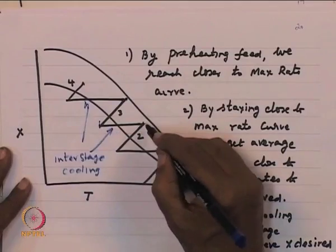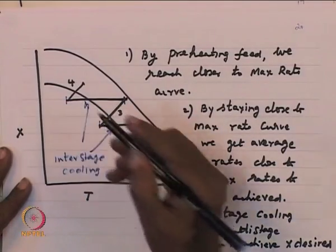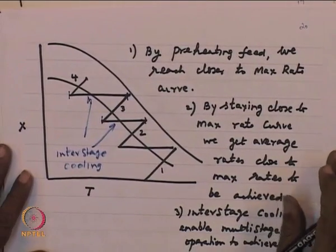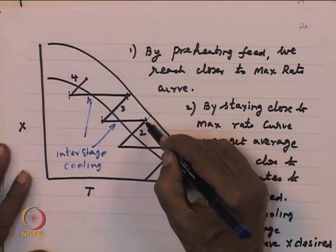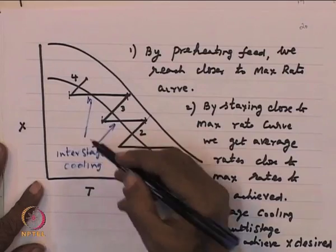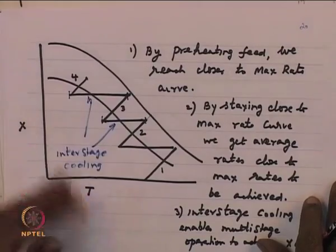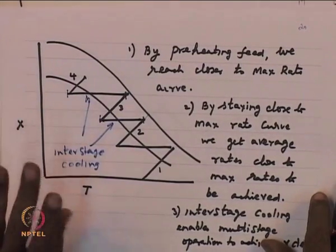These points — how far you go in one stage, how far you cool during inter-stage cooling — are all design decisions that determine the economics of the process. You will have to do a number of iterations before you get the design that satisfies your economic criteria. The criteria is not just economics; there are safety criteria and various other issues that go into your objective function.